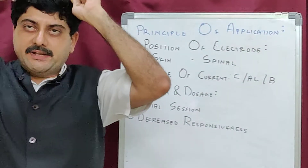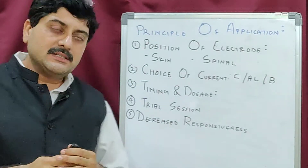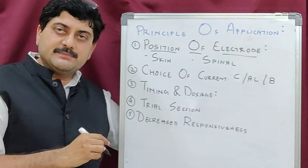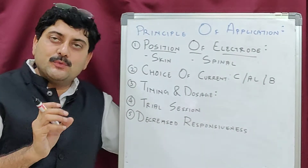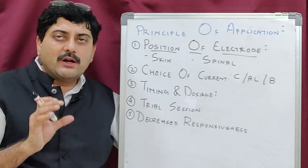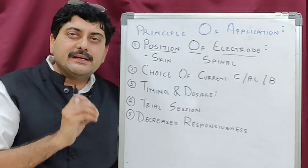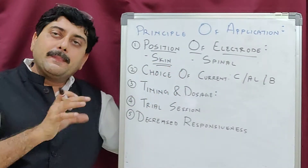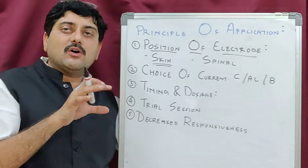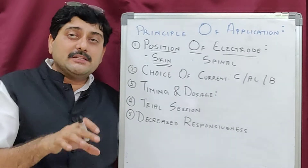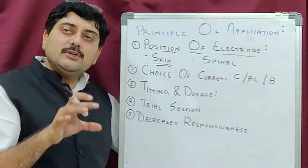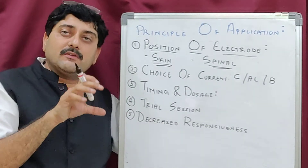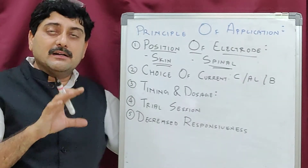Let us understand the principles of application of TENS. The first thing is the position of electrodes — the cathode has to be kept proximal and the anode has to be kept distal. Depending on what type of disease you are going to treat or what type of pain relief you want, you have to decide whether the electrode position should be on the skin right over the pain, surrounding the pain, the myotomal position, the dermatomal position, or the neuronal position.